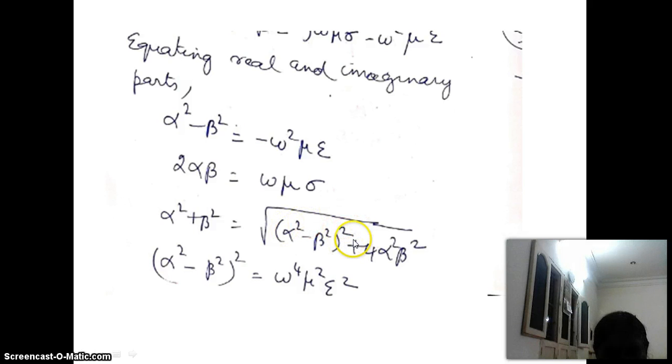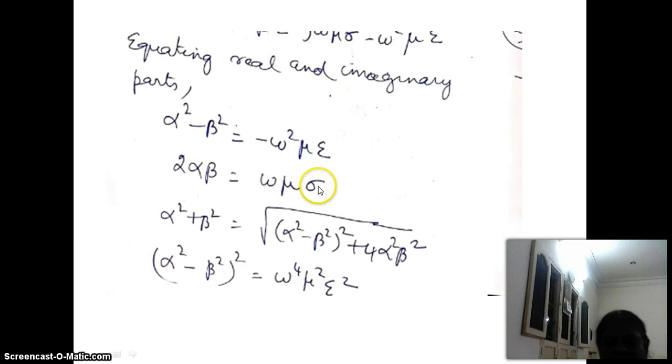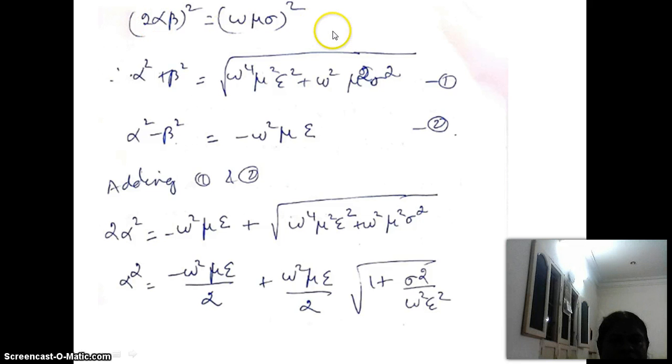We now write a general expression for alpha squared plus beta squared. It can be written as the square root of (alpha squared minus beta squared) squared plus 4 alpha squared beta squared. Squaring the real-part equation gives: (alpha squared minus beta squared) squared equals omega to the fourth times mu squared epsilon squared. Squaring the imaginary-part equation gives: 4 alpha squared beta squared equals omega squared mu squared sigma squared. So we have two equations: one for alpha squared plus beta squared, and one for alpha squared minus beta squared.